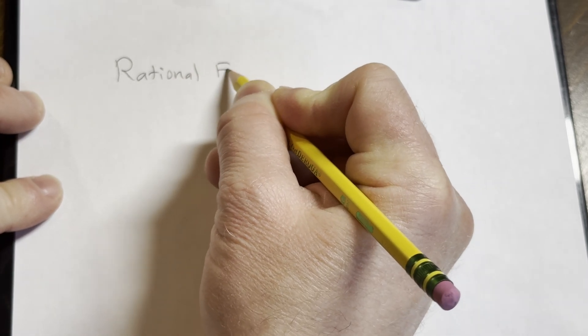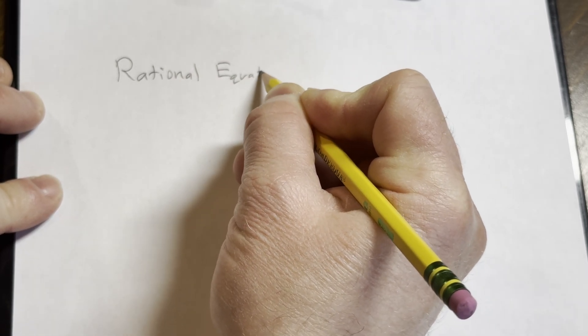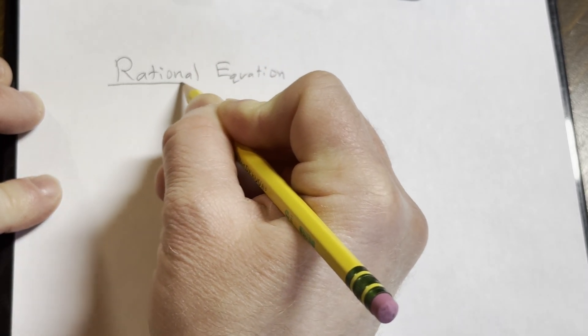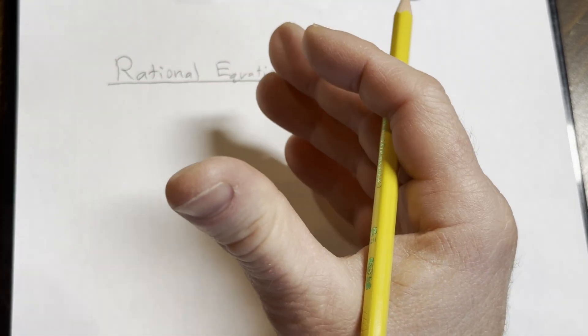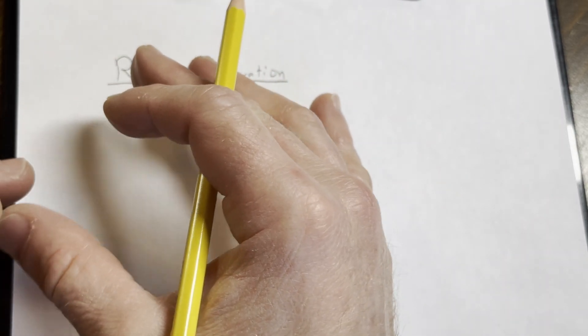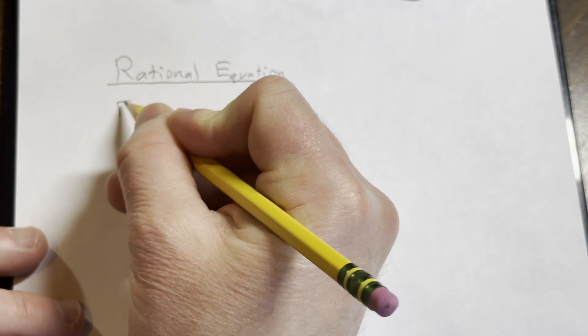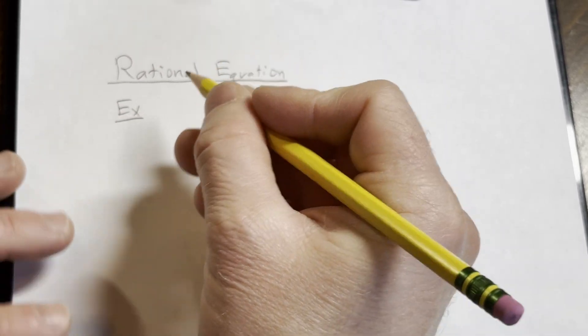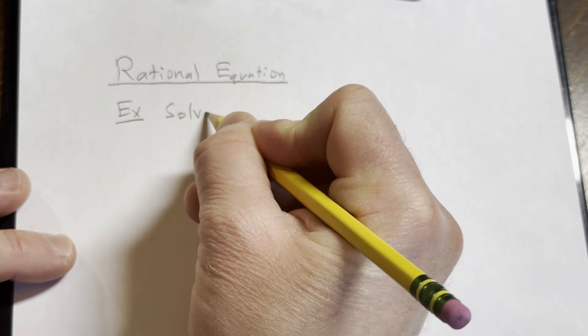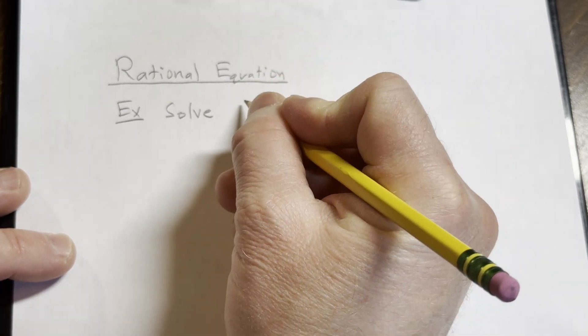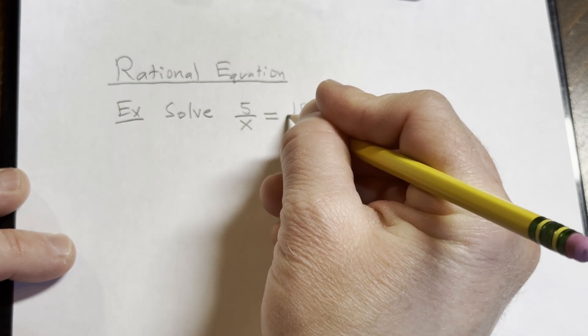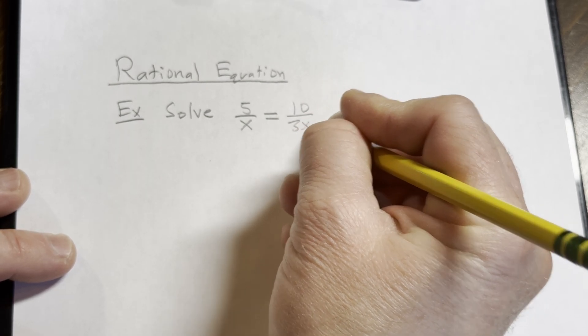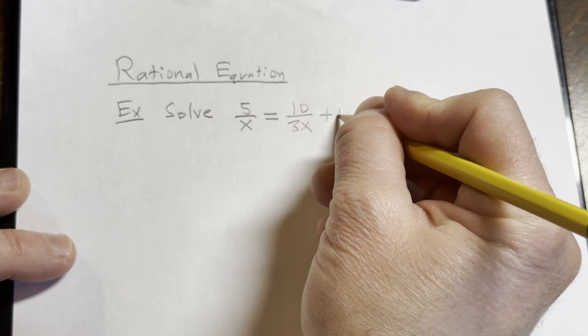A rational equation is an equation with one or more rational expressions. Let's go ahead and do a simple example of solving a rational equation. Solve 5 over x equals 10 over 3x plus 4.